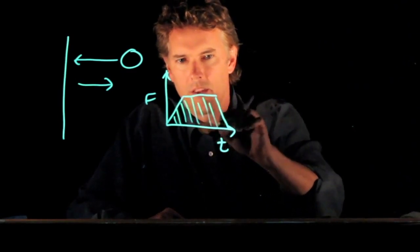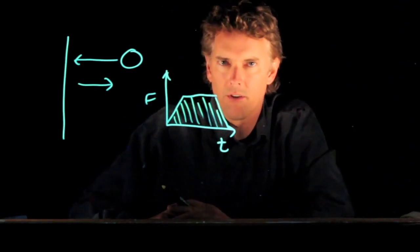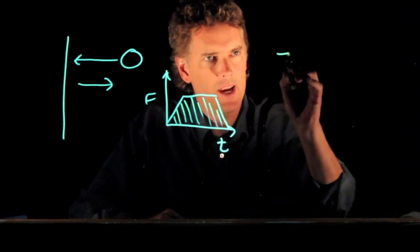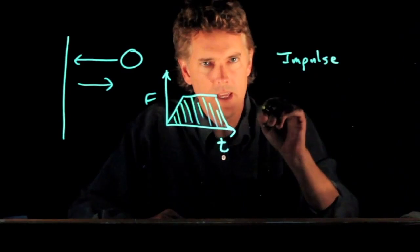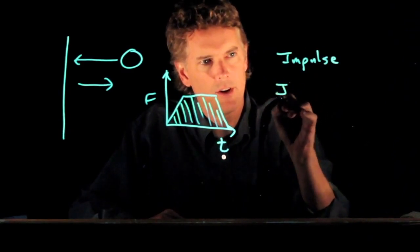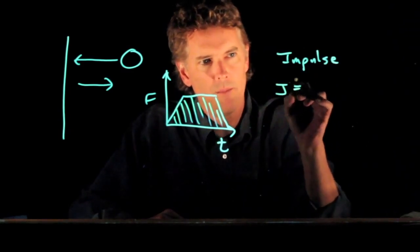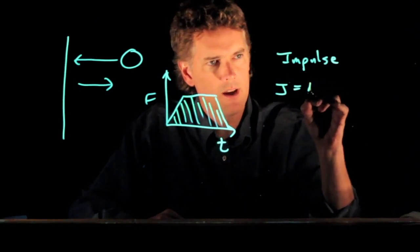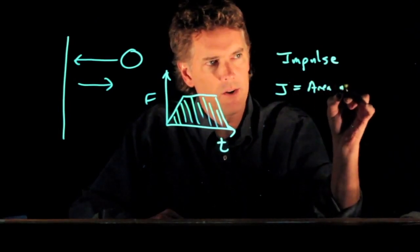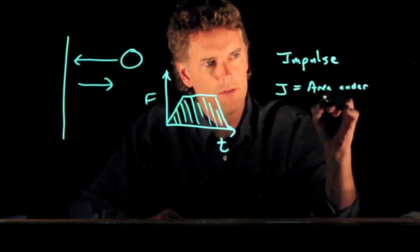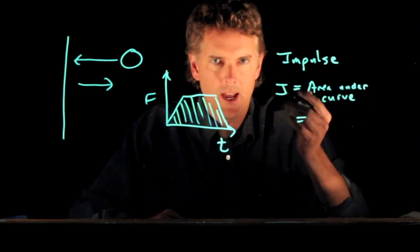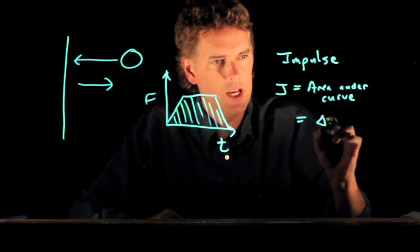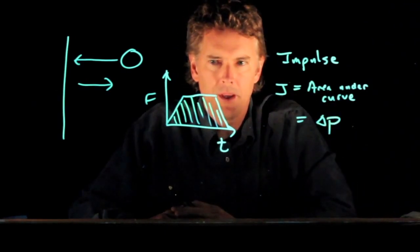So if we think about this problem, what we know is the area under the curve is important. And in fact, the area under the curve tells us the impulse that is delivered to the ball. Impulse we write with a J. That's equal to the area under the curve. But impulse J is simply change in momentum, delta P.